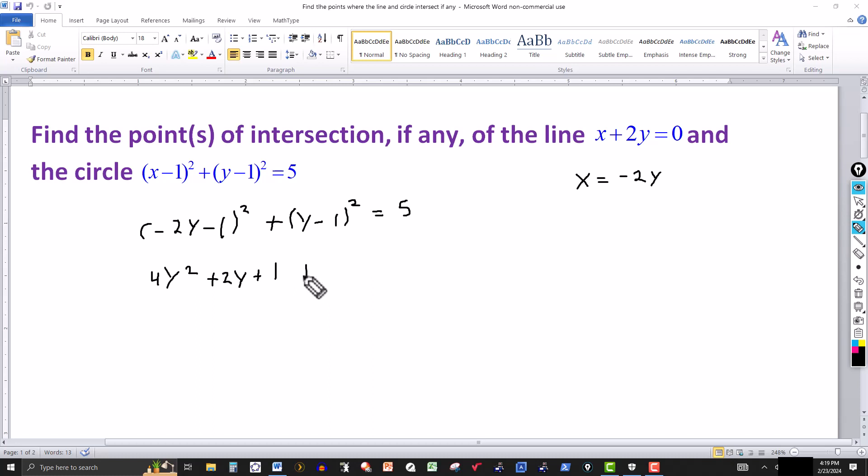And for the second one, it's y minus 1 quantity squared, so it gives me the y², which will give me this. I've got a sign minus there, so it's minus the product, twice the product there, so it'll be 2y. And it's plus the second term squared, negative 1 squared is a plus 1. And that equals to 5.